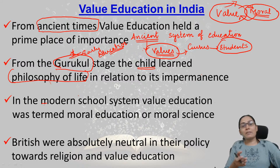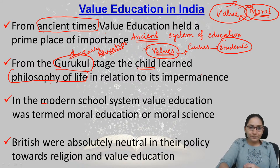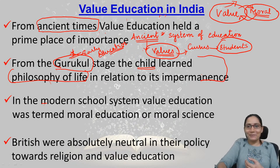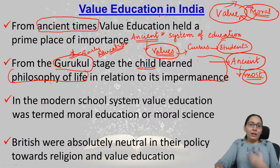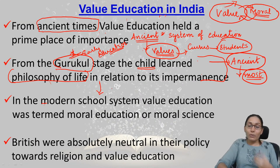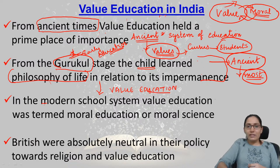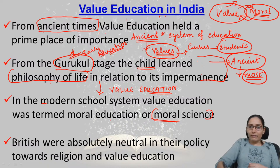In ancient times, the most important part of the education system itself was value education. How value education got transferred from ancient India to the modern school system was through moral education or moral science. So moral education or moral science is the form of value education given in modern times.